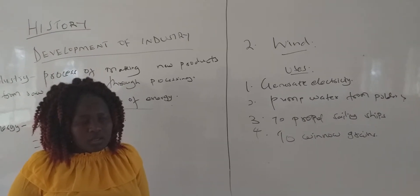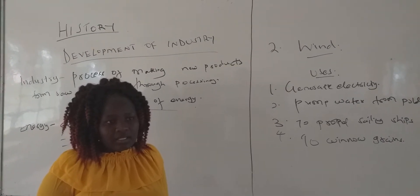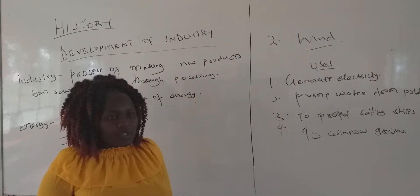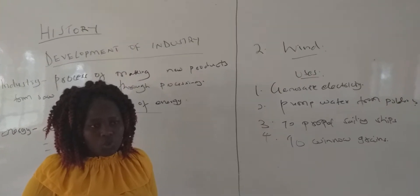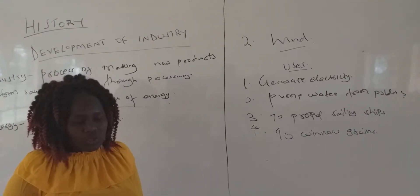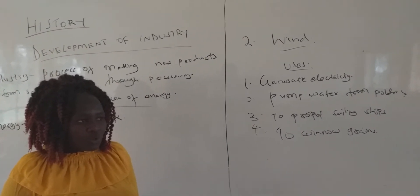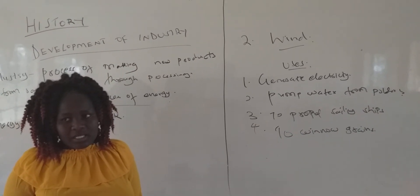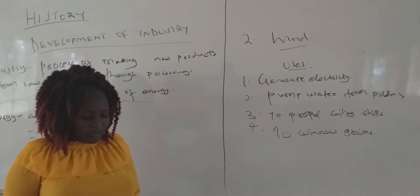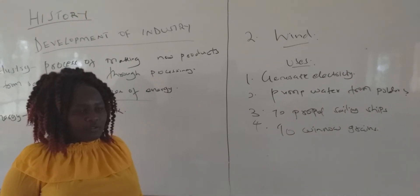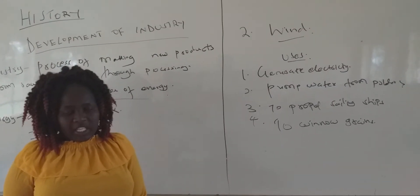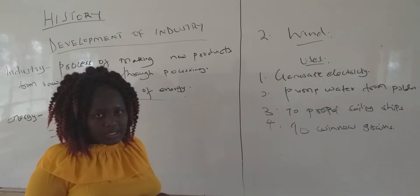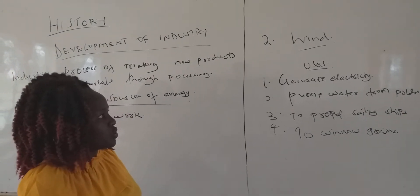What are the disadvantages of wind energy? Disadvantage number one, and the greatest disadvantage, is that it is unreliable. At times there is wind and at times there is no wind. During dry seasons you find there is no wind, then during cold seasons there is wind. So it is not reliable because the weather keeps changing. Another disadvantage is that sometimes it is not available at all — during the dry seasons, wind energy is simply not available.